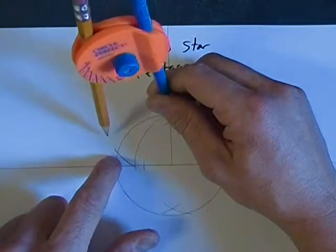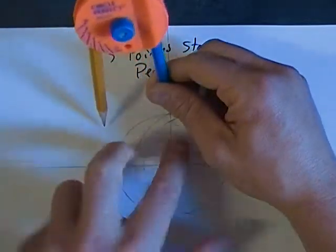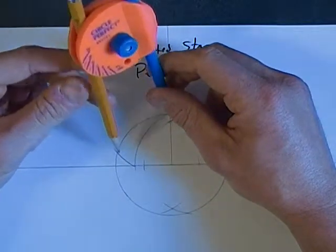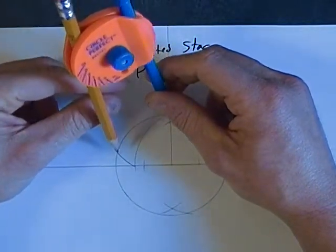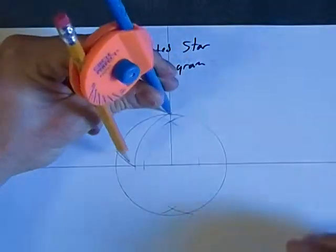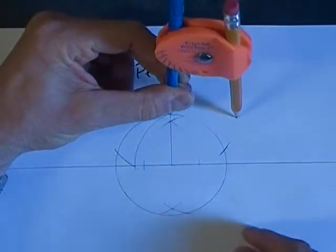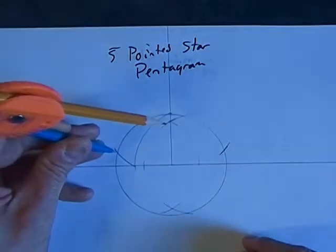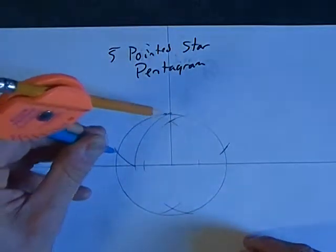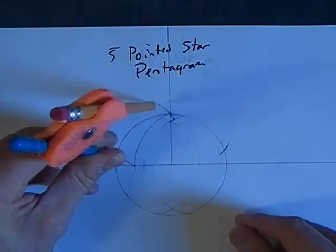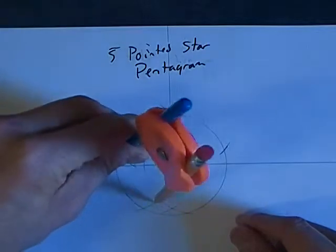And then we're going to sweep this out so that it crosses the circumference. Now this distance that the compass is set is what we need to divide the circle into five points. So we go over to this side of the circle and make our arc here, then we go to what will be the point, one of the shoulders of our star. We find the top and we find one of the feet.